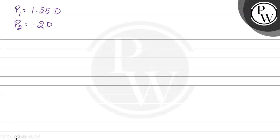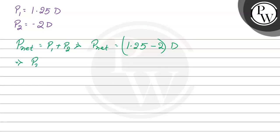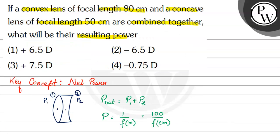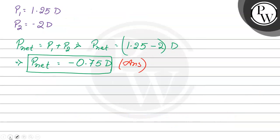हमें net power find करना है। P net will be equal to P1 plus P2, so P net is equal to 1.25 plus (minus 2), which gives P net is equal to minus 0.75 diopter. So this will be our final answer। If we check the options, the correct option will be option number 4 — minus 0.75 diopter. I hope the solution is clear to you. Thank you and best of luck.